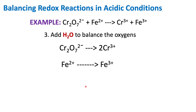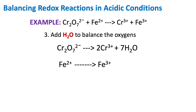Now we're going to add water to balance the oxygen. We can see we have 7 oxygens, so we're going to add 7 H₂O to balance out those oxygens. For every 1 water we have 1 oxygen, so in reality we added 7 oxygens to this side. Now we have 7 oxygens on the right hand side and 7 oxygens on the left hand side. For our second half reaction with iron, we have no oxygens, so we're not worried about adding water.